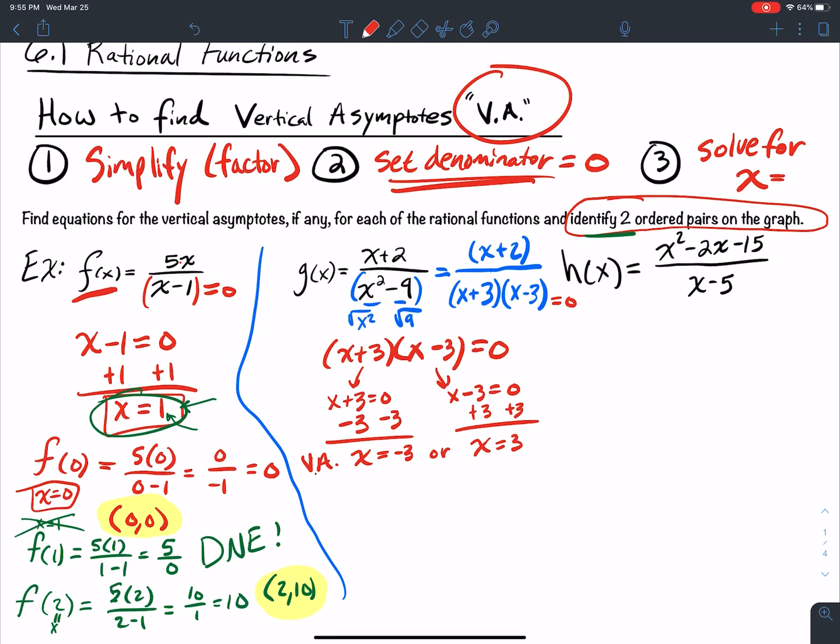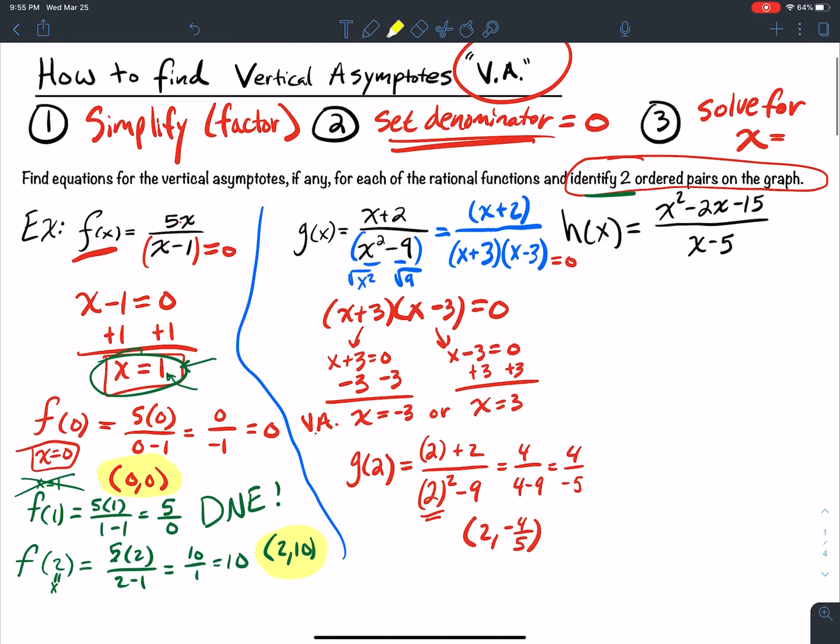If you wanted to find another point, you just pick a number and plug it in. So maybe g of 2. If I plug in 2, I get 2 plus 2 over 2 squared minus 9. So 2 plus 2 is 4. 2 times 2, that's 2 squared, that's 4 minus 9. 4 minus 9 gets me negative 5. So that's going to be 2 comma negative 4 over 5.